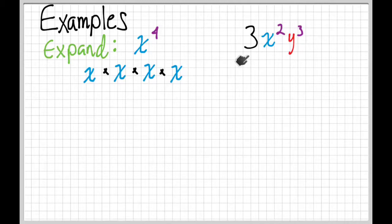With this one, we have a 3, so we just get the 3. Then we've got two x's, x times x, and then three y's, y times y times y. And there it is, expanded.